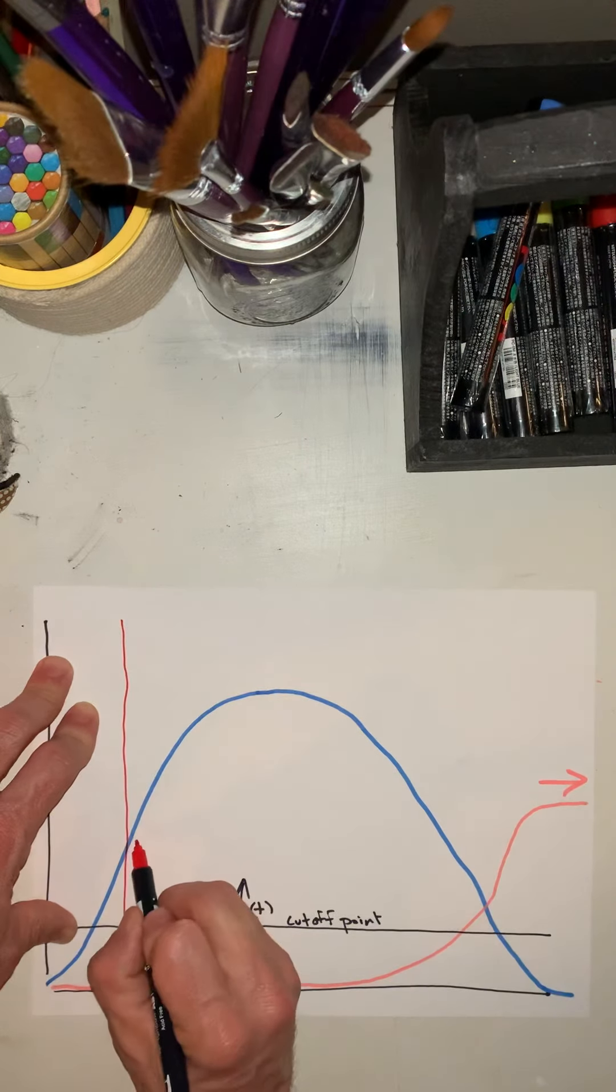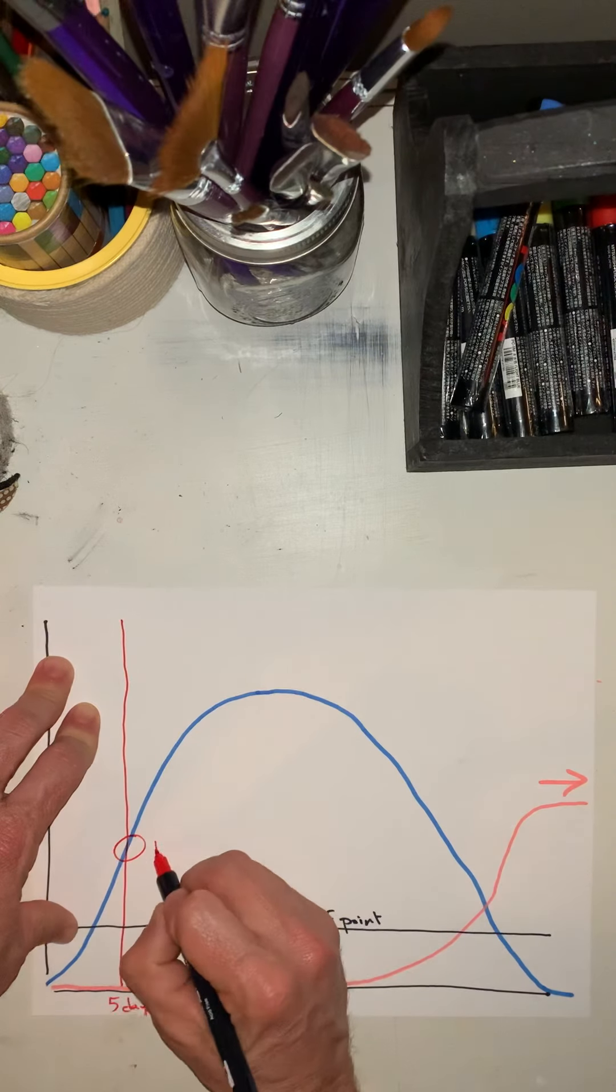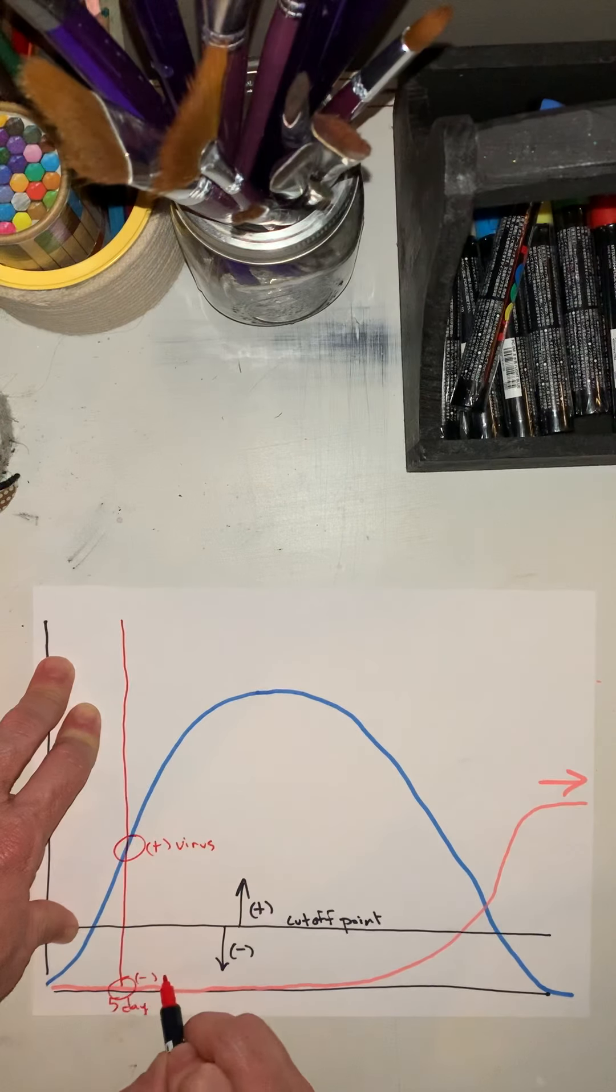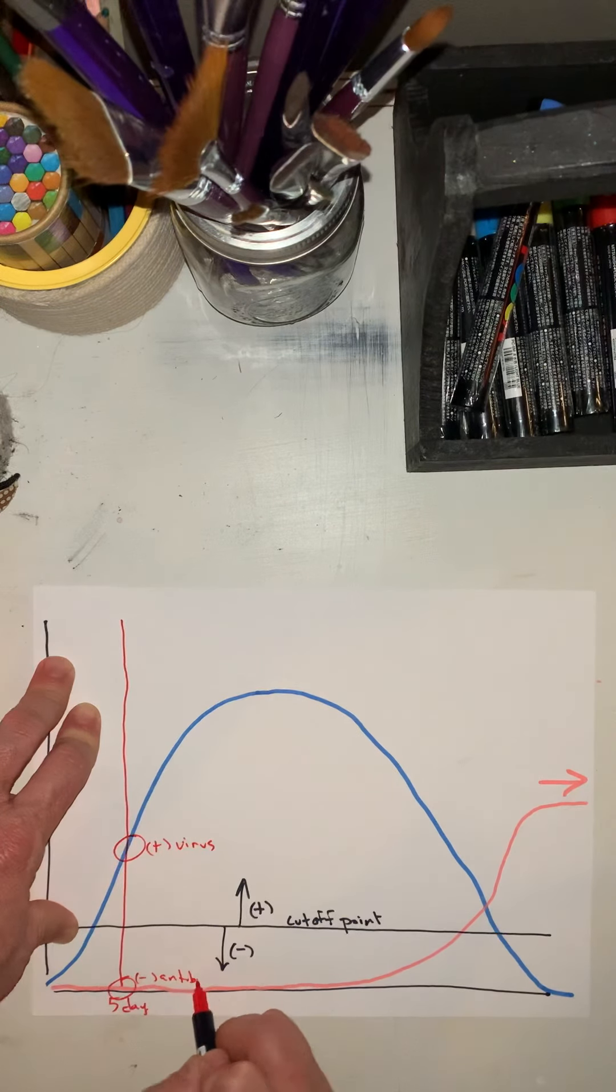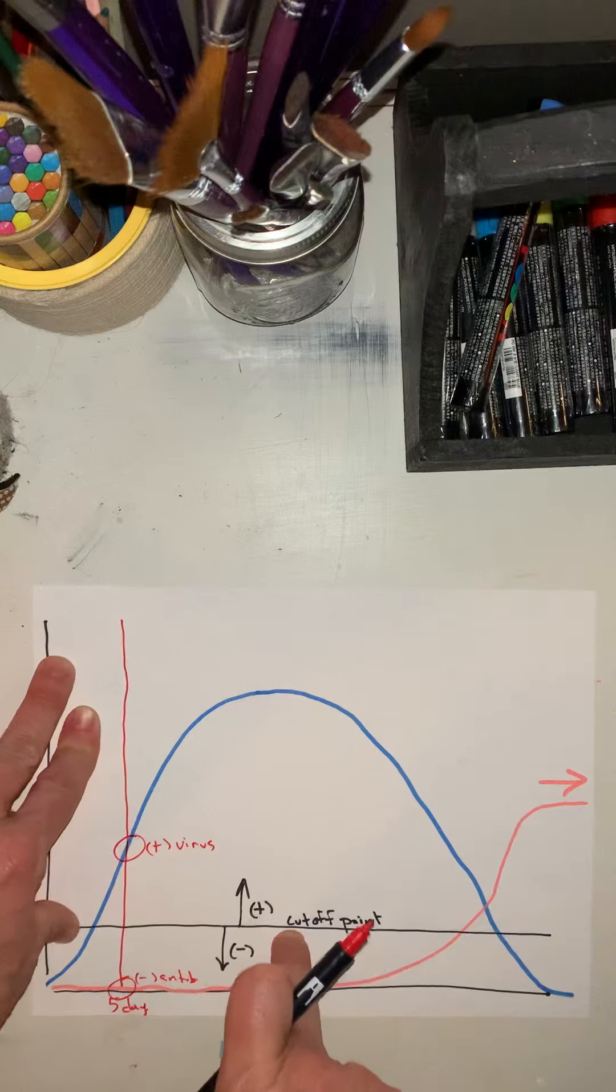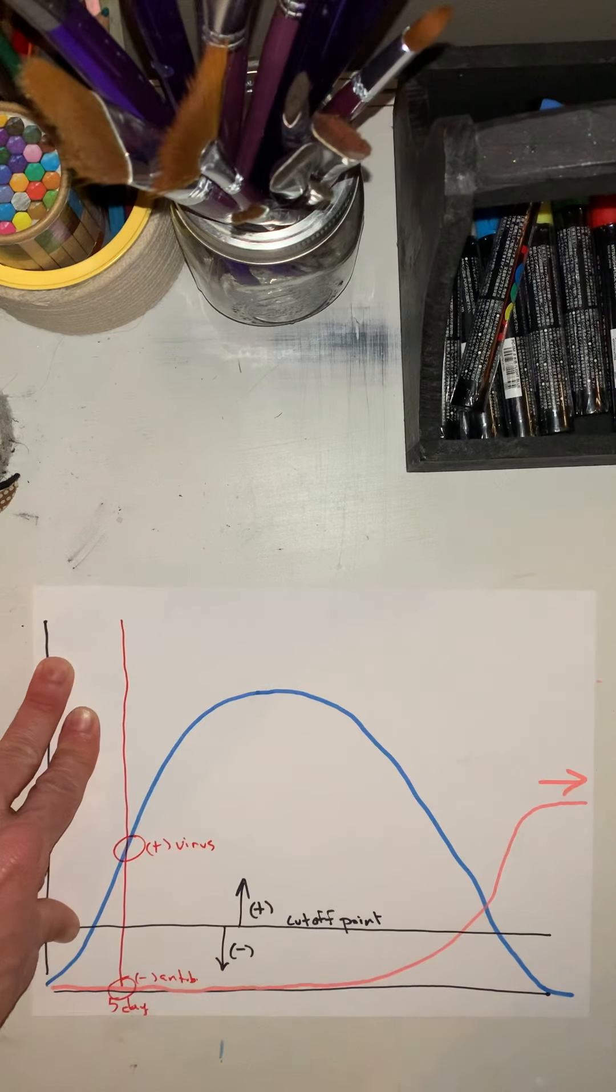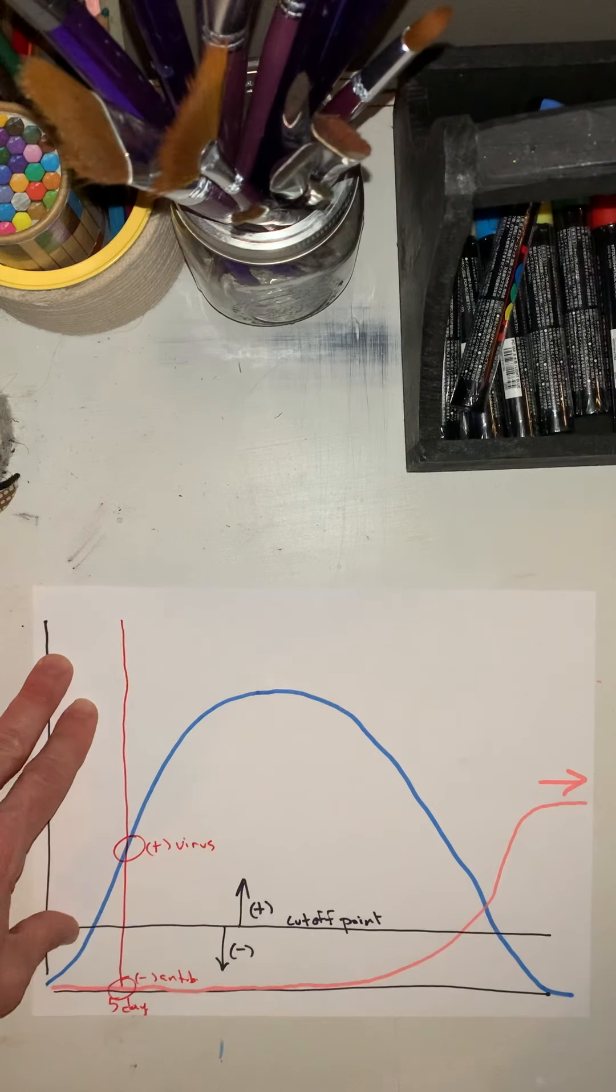At this point in time, you will be positive for the virus. However, you'll be negative for the antibodies. This is because you're below the cutoff point. Basically, it's too early in the life cycle of this virus, and you haven't had enough time to build up the antibodies.